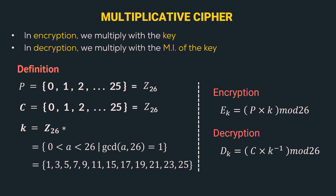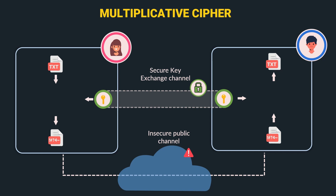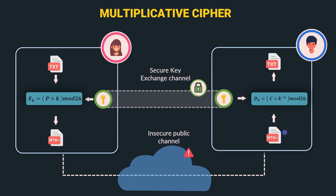Let's look at the diagrammatic representation using the template of a symmetric key cryptosystem. Here the encryption algorithm used by Alice is ek = p × k mod 26. Alice takes the plain text, multiplies by key k, and applies mod 26 to generate the ciphertext. This ciphertext is passed through an insecure public channel to Bob. Bob uses the decryption algorithm dk = c × k⁻¹ mod 26, using the ciphertext and the multiplicative inverse of key k to generate the plain text.